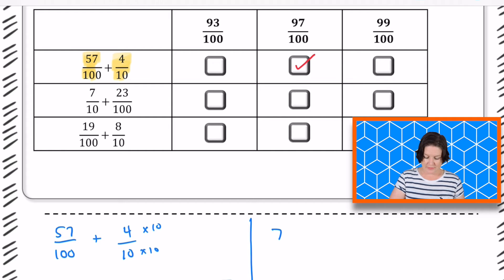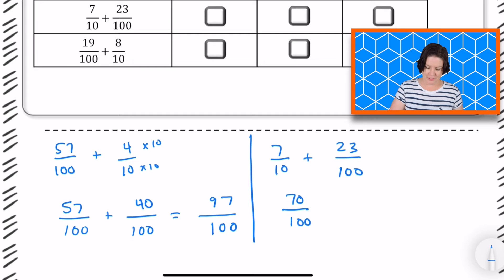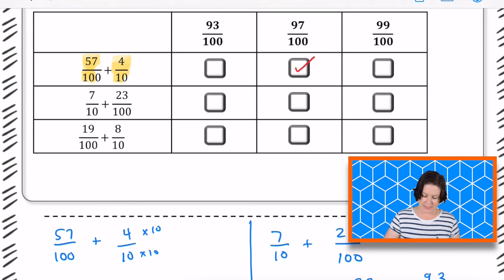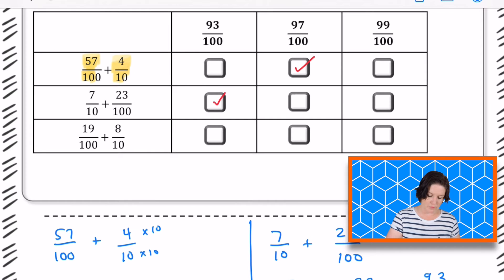Next we have 7 tenths plus 23 hundredths. Again, when we add or subtract, our denoms must match. So we'll change 7 tenths into how many hundredths? 70, right? Very good. Plus 23 hundredths. So 70 hundredths plus 23 hundredths equals how many hundredths? 93 hundredths. Very good. Is that an answer choice? It is. So we're going to line it up, match it up. We're working with this expression, move it over into 93 hundredths.